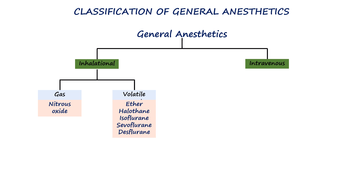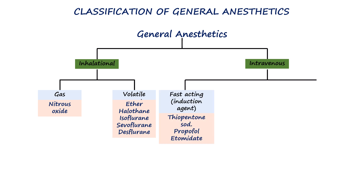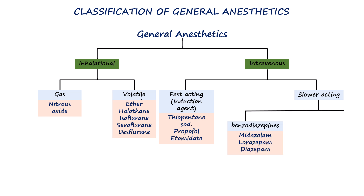Intravenous agents can be classified as rapid-acting drugs, which are used for anesthesia induction, and slower-acting drugs. The slower-acting drugs are needed for amnesia, like benzodiazepines, and analgesia, like fentanyl.